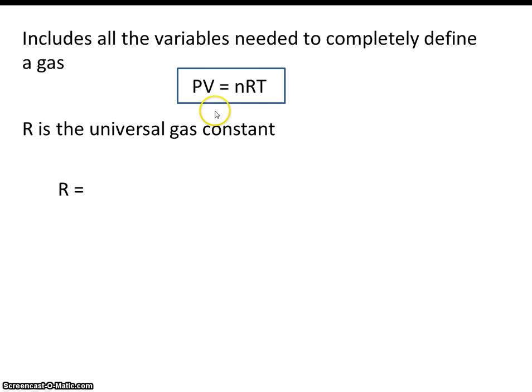Let's say we wanted to solve this equation for R. So we want R by itself. That means we'd have to divide both sides by n and T. So it would be PV divided by nT. Now solving for R, that will tell us what the units are on R.